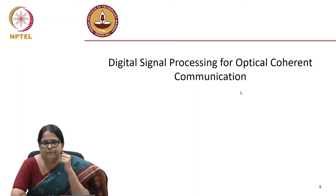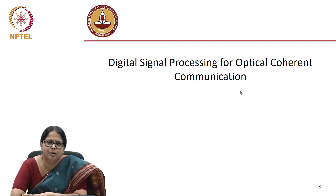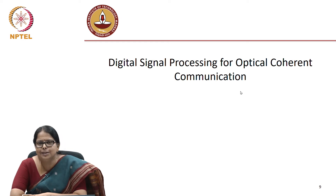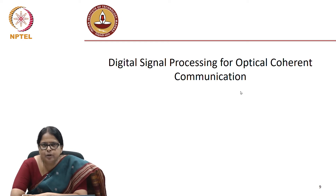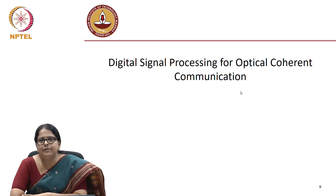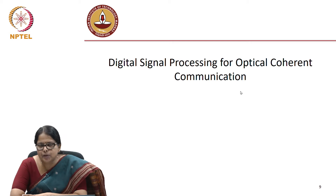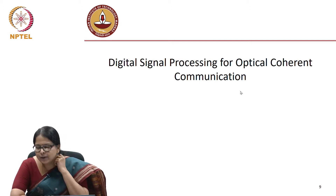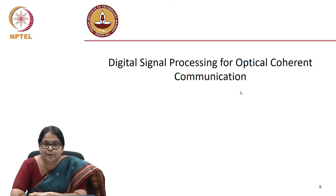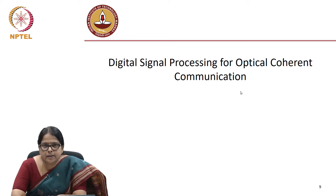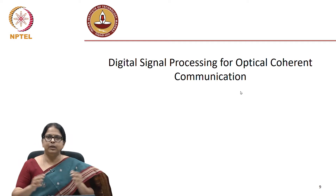In the last module, we had seen how a coherent receiver works, and earlier in dispersion compensation I had already introduced how dispersion can be compensated digitally. Now in this module, we are going to see some more details of the basic digital signal processing relevant for an optical communication system. This is not a full-fledged course on DSP — we are going to spend less than a week on it. This module just gives you an introduction to the complexities of digital signal processing needed so that the optical coherent communication system actually works in a seamless manner.